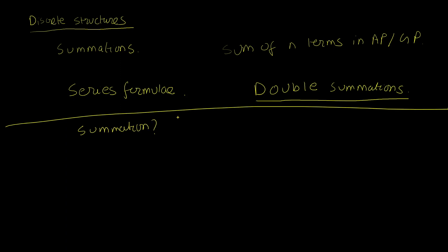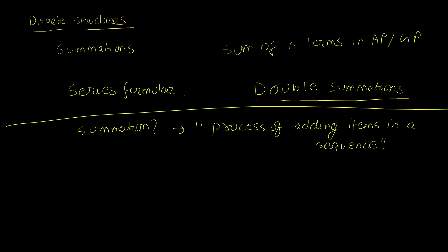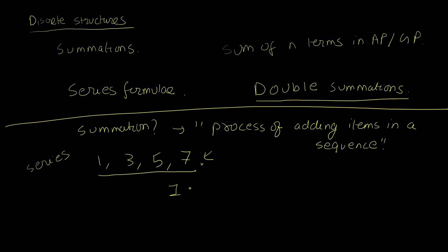A summation is just the process of adding items of a sequence. So when I list numbers like one, three, five, seven as a finite sequence, and then add all of them together, it becomes a summation or a series. A series is nothing but a sequence with all of its terms added together.